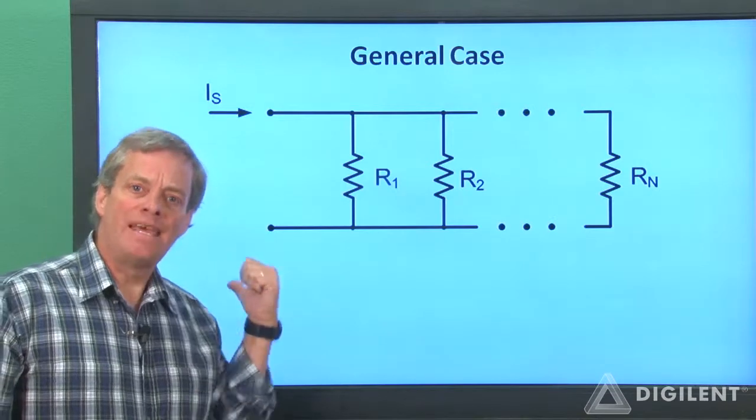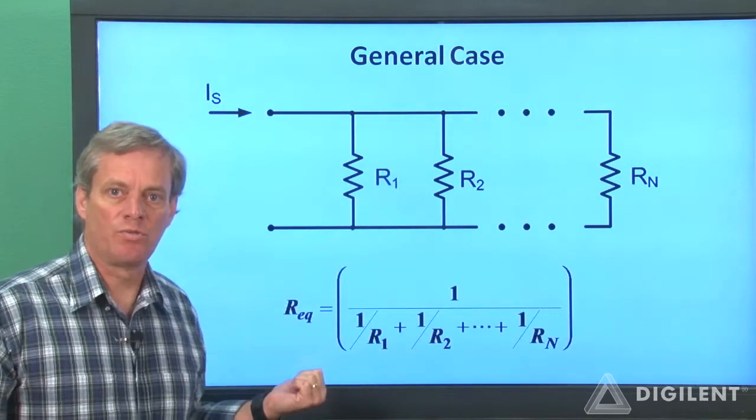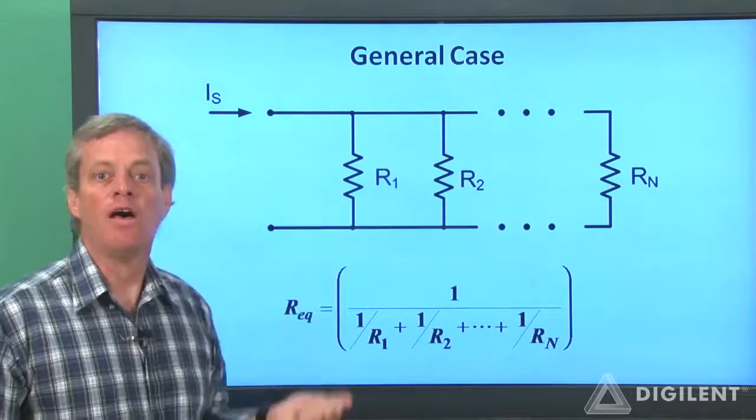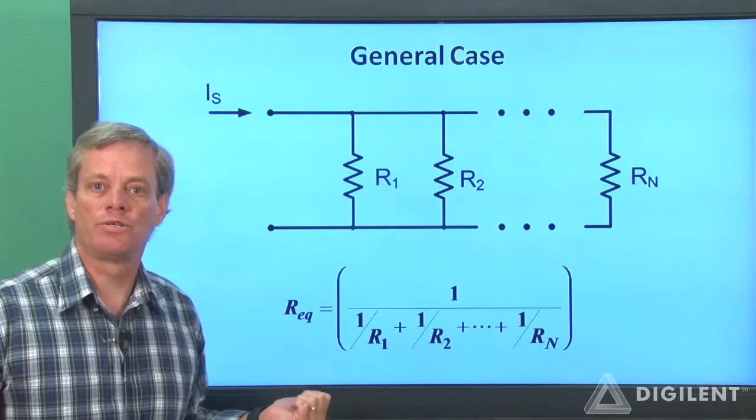Now if we do basically the same analysis we did previously for just two resistors, we'll find that the equivalent resistance of this combination follows the pattern of the first relationship we obtained for two resistors.